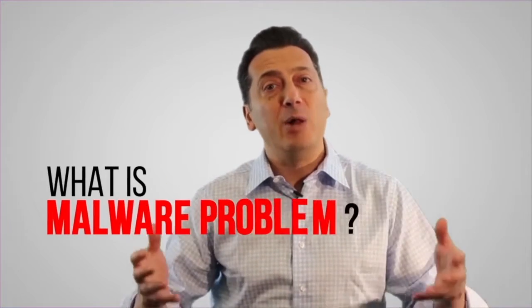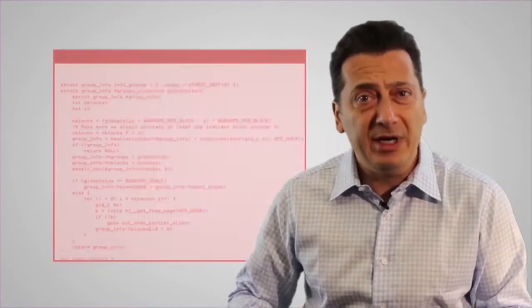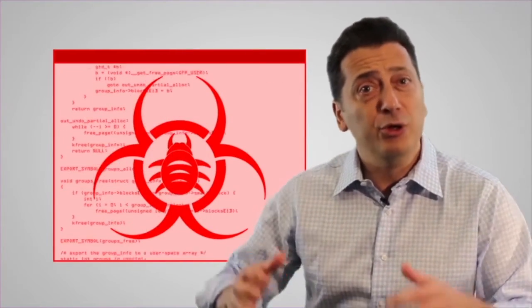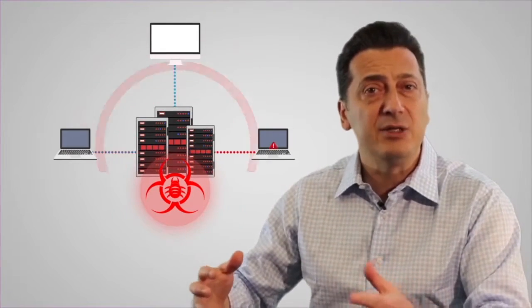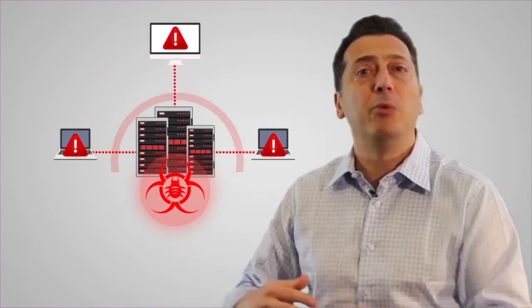It's legitimate code doing illegitimate things. What is the malware problem? The malware problem is you running that legitimate code doing illegitimate things with unfettered, unlimited access on your computer, on your network. So if you solve the problem of running it with unfettered, unlimited access to your network, you will solve the malware problem.